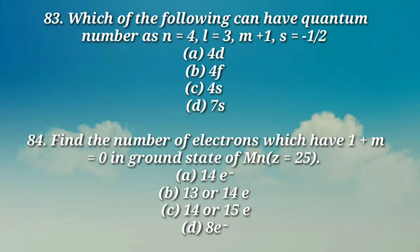Question number 84: Find the number of electrons which have l plus m equals 0 in ground state of Mn (Z equals 25). (a) 14e, (b) 13 or 14e, (c) 14 or 15e, (d) 8e.